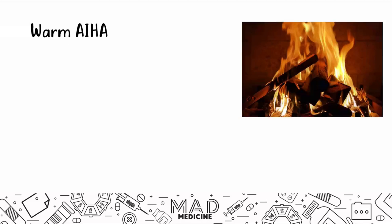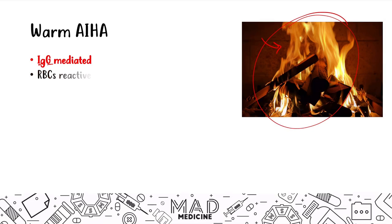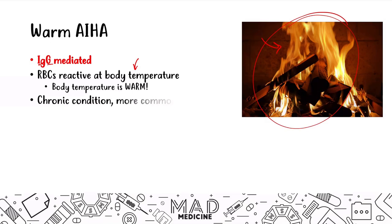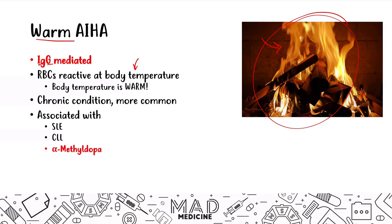In warm autoimmune hemolytic anemia, you're going to see more IgG deposition — that is the main hallmark. Red blood cells react at body temperature, which is the reason we consider it 'warm.' This is a chronic condition and is more common than the IgM type. It's associated with lupus and CLL.